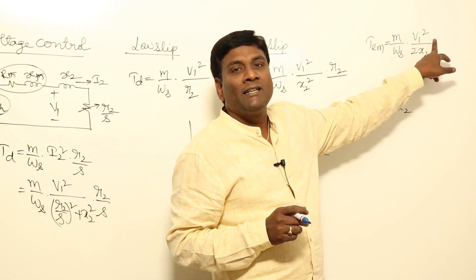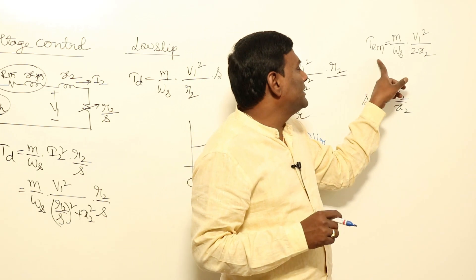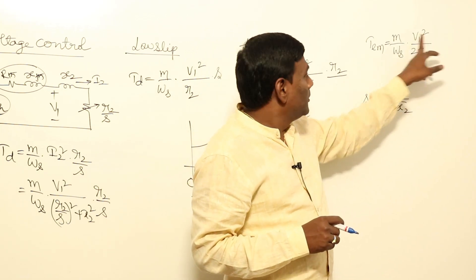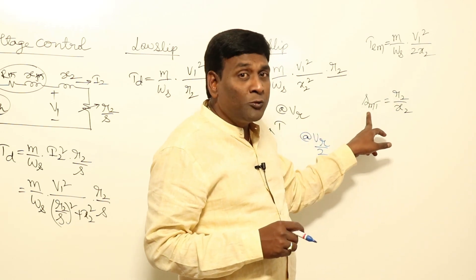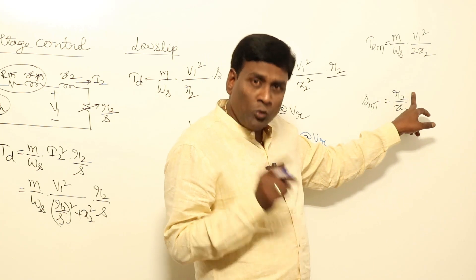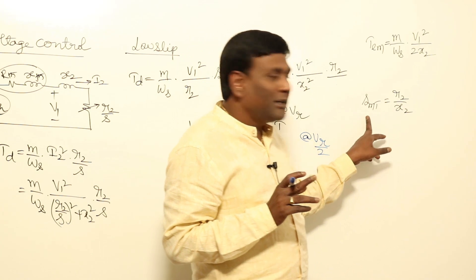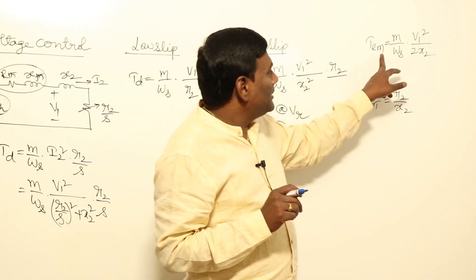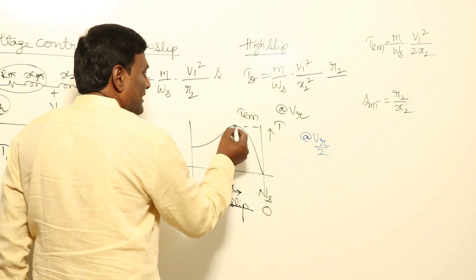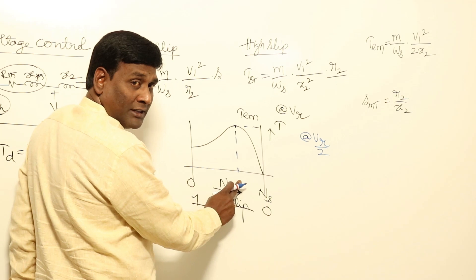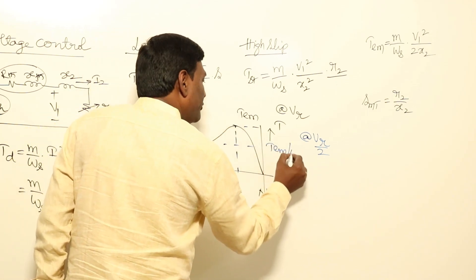If voltage is reduced by 10%, pull-out torque is reduced by roughly 20%. Coming to the point: if voltage is reduced to half, pull-out torque will be reduced by one-fourth. What about the slip at which maximum torque occurs? R2 and X2 are not varying — only voltage is varying. So the slip at which maximum torque occurs will not change, but maximum torque magnitude will be one-fourth, i.e., TEM by 4.